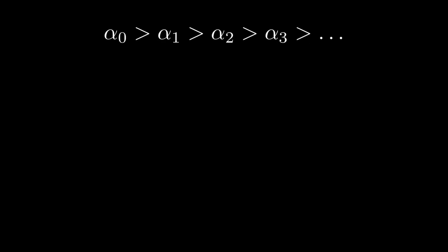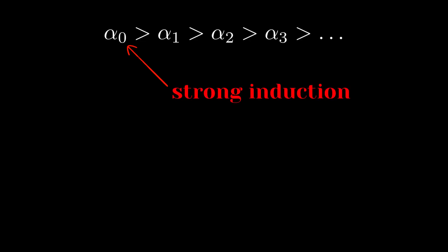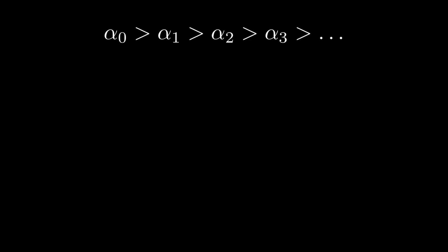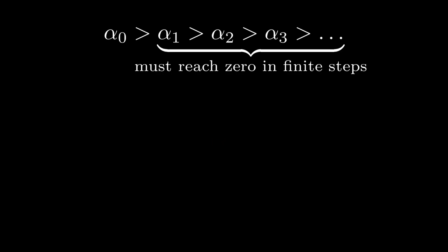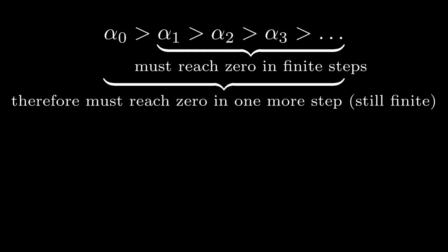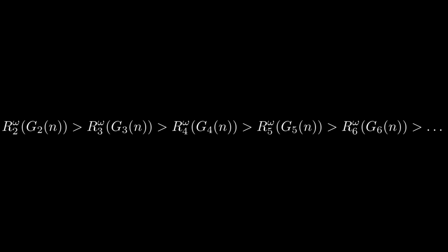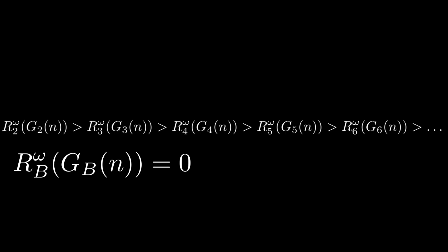If you see the pattern, the general case is pretty much the same. The idea is to proceed by induction on the first term of the sequence. If we have a descending sequence of ordinals starting with alpha-naught, then we get a descending sequence starting with alpha-1 by looking at the tail. But if we prove that any descending sequence starting with something smaller than alpha-naught must go to zero in finitely many steps, then since alpha-1 is smaller than alpha-naught, that sequence must hit zero in finitely many steps. Therefore, our original sequence hits zero after finitely many steps plus 1, which is still finitely many steps. Therefore, the descending sequence of ordinals associated to a Goodstein sequence also hits zero in finitely many steps. And if the associated ordinal is zero, then the original Goodstein term has to be zero as well. So this completes the proof of the original claim.